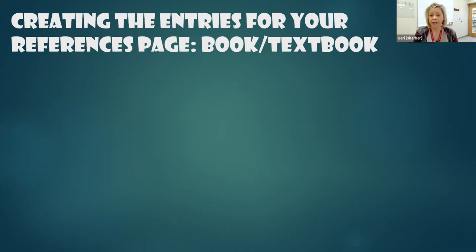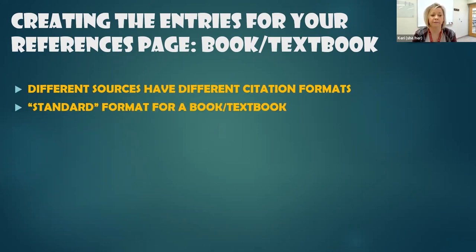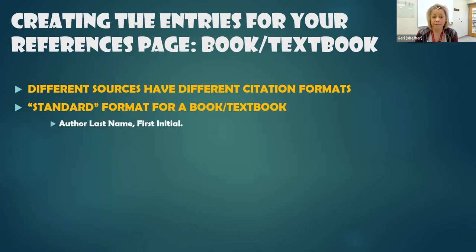When you are creating a reference entry for a book, there are four pieces of information that you are going to be looking for. In APA, different sources have different formats for the citation. So the standard format for any book or textbook, we are going to be looking for the author, and APA uses the ordering of the author's last name.